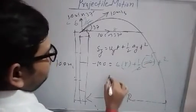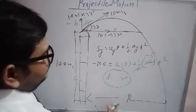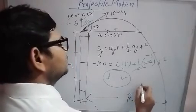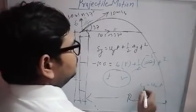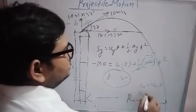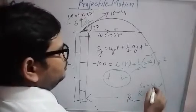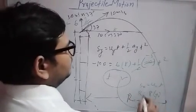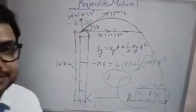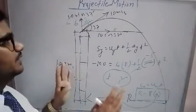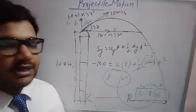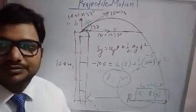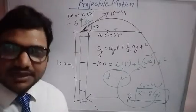Once you have the value of t from the y-direction equation, you can find the range using the x-direction equation: s_x = u_x · t, where u_x = 8 m/s, and substitute the time you calculated to get the range. I hope you students are very clear on the concept of projectile motion. Try to solve numerical problems from our module and ask me your doubts via WhatsApp or the doubt counter. Thank you for watching this video.